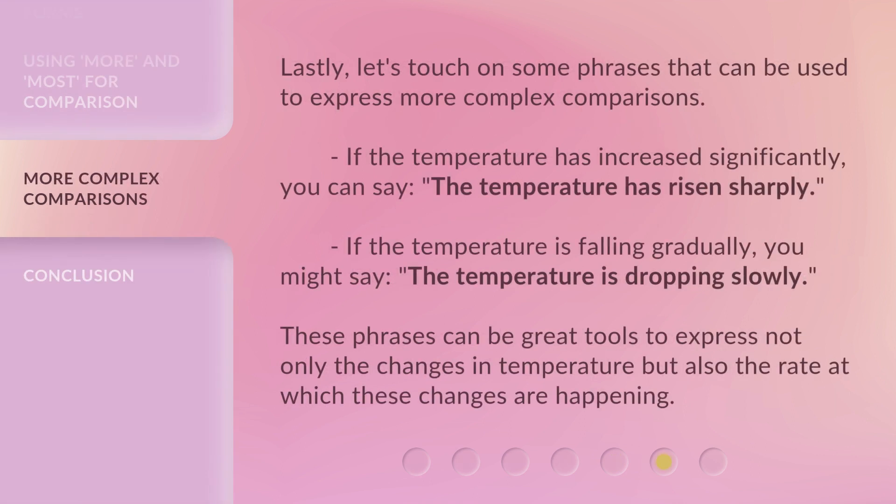Lastly, let's touch on some phrases that can be used to express more complex comparisons. If the temperature has increased significantly, you can say, "The temperature has risen sharply." If the temperature is falling gradually, you might say, "The temperature is dropping slowly." These phrases can be great tools to express not only the changes in temperature, but also the rate at which these changes are happening.